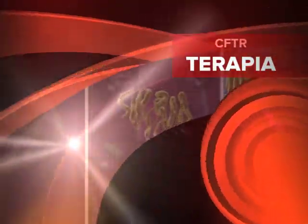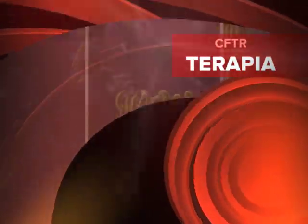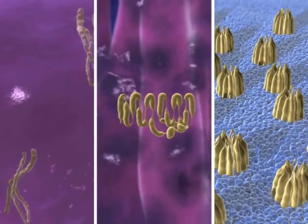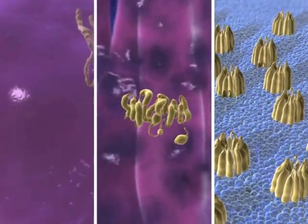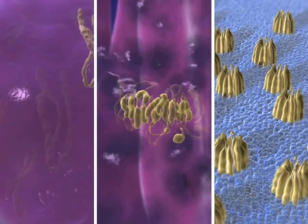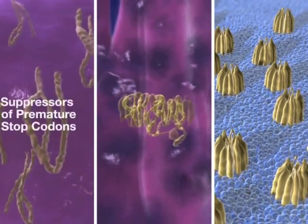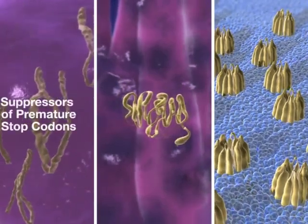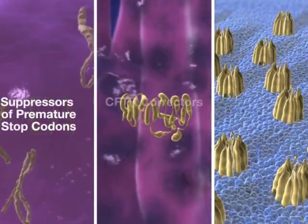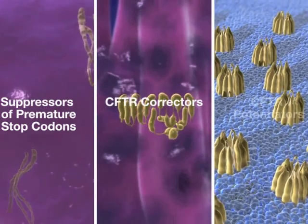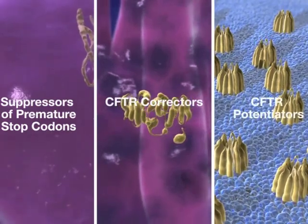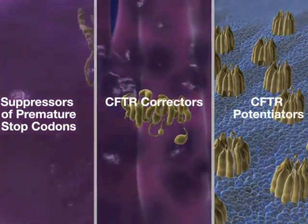Several types of compounds are under investigation that specifically target dysfunctional CFTR. Three major types are suppressors of premature stop codons, CFTR correctors, and CFTR potentiators.